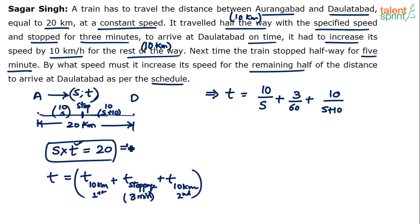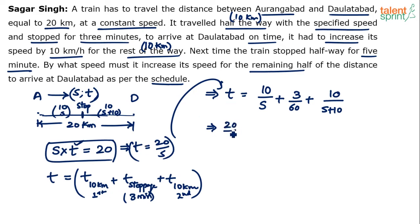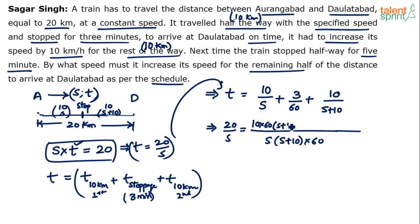Substituting T = 20/S into the equation, we get one equation in terms of S. Taking the LCM on the right-hand side as S×(S+10)×60, we expand: 20/S = [10×60×(S+10) + 3×S×(S+10) + 10×S×60] / [S×(S+10)×60].